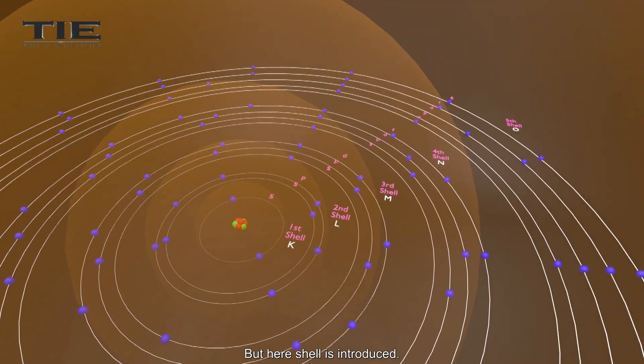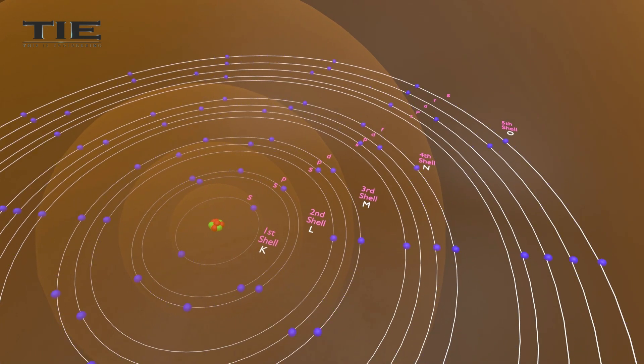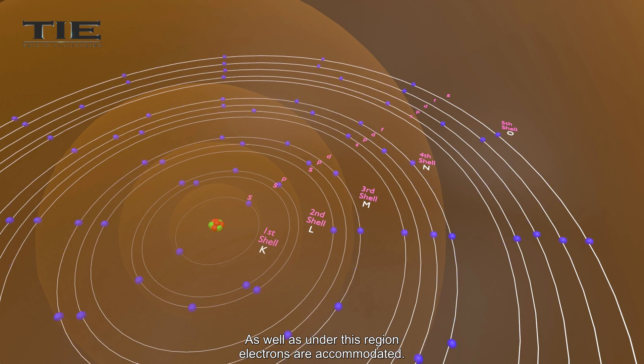But here, shell is introduced and it is also like a spherical region. Under this region, electrons are accommodated.